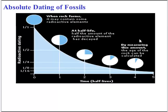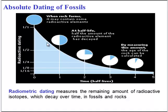Fossils can also be absolutely dated, meaning we put an actual number on the age of the fossil. This involves the use of radioactive isotopes — chemicals that decay at a regular rate over time. By measuring how much of that chemical is left in the organism, we can determine how old it is. Depending on how old the fossil is, different isotopes will be used.